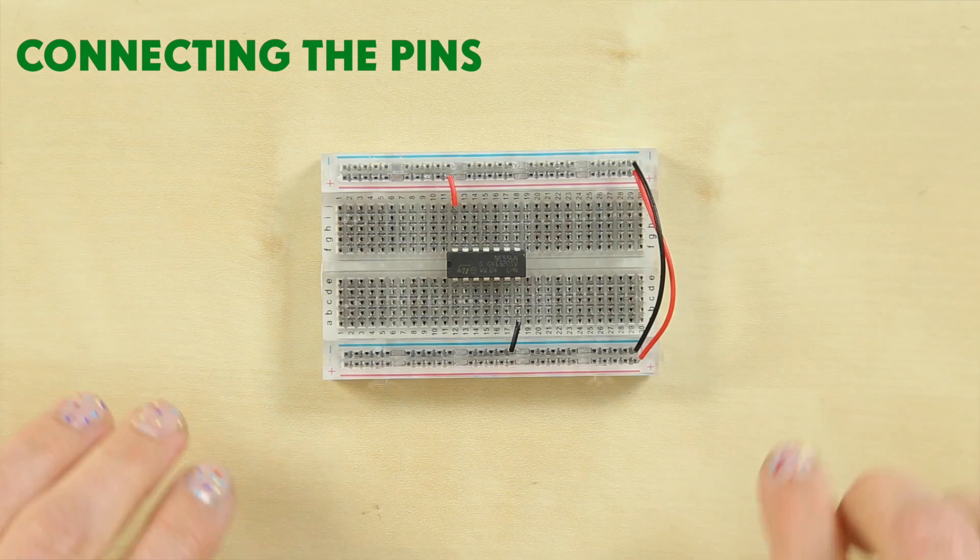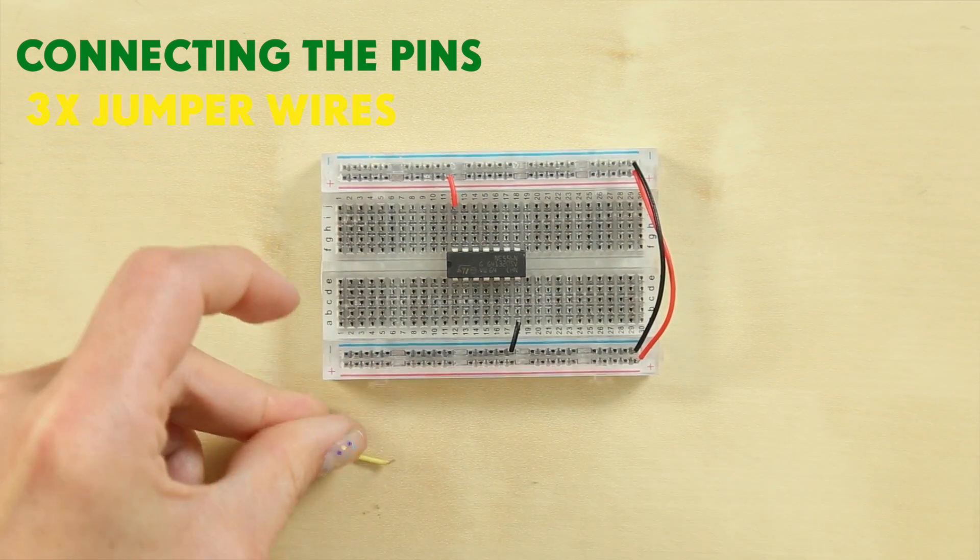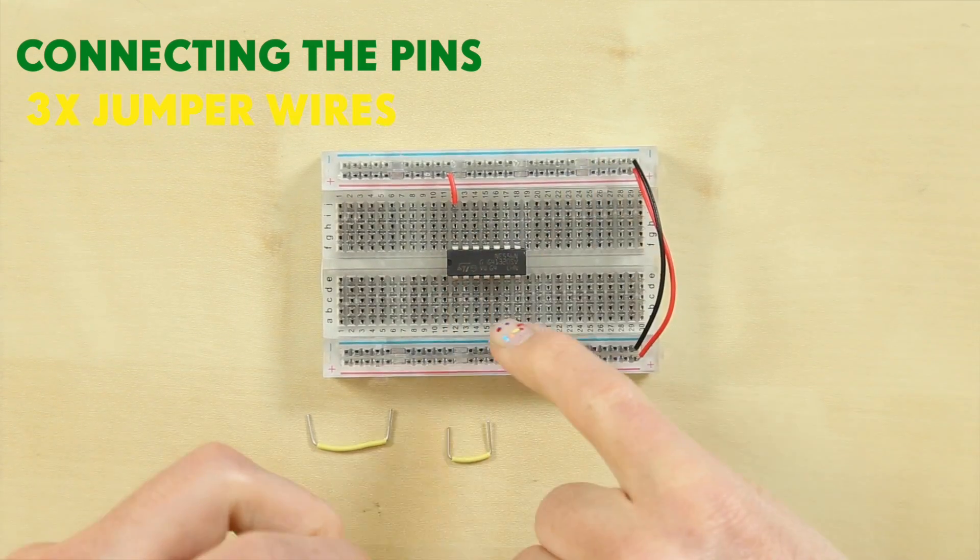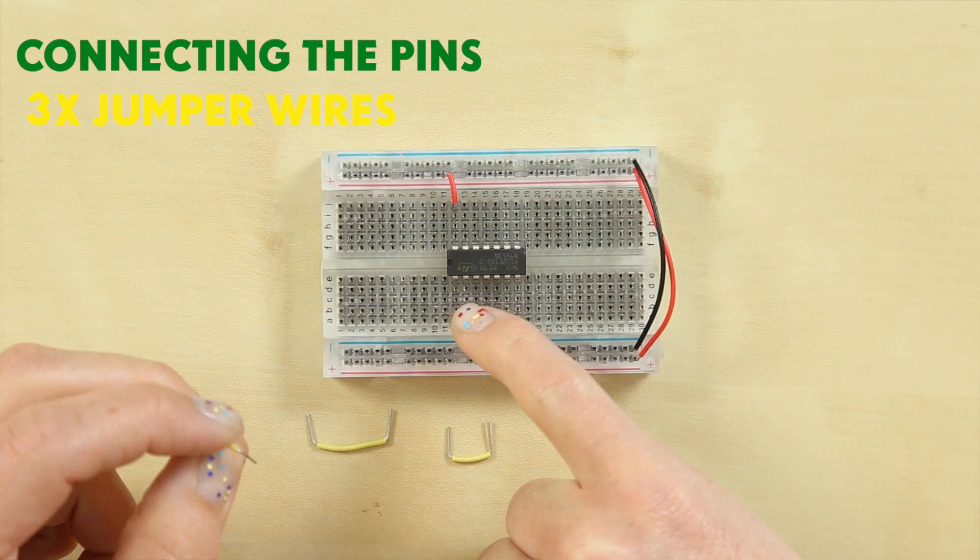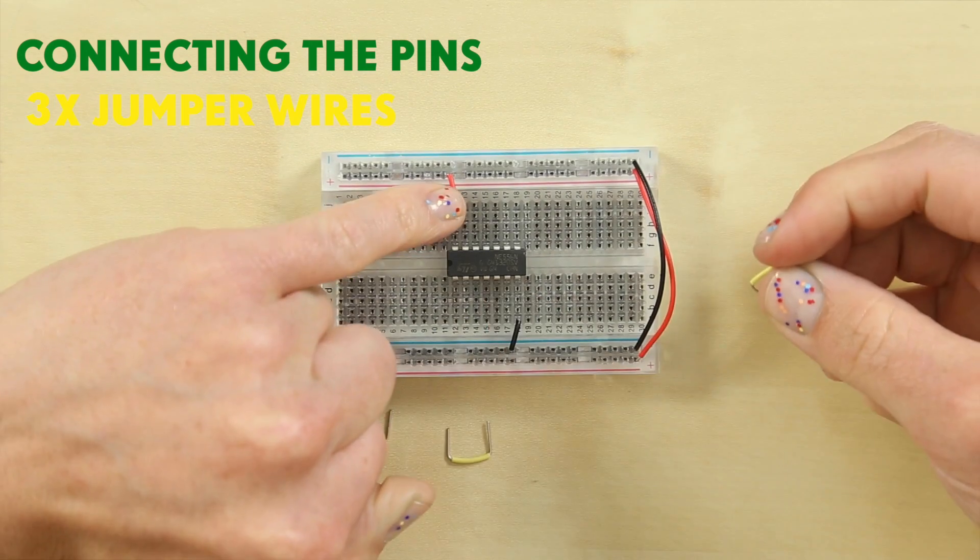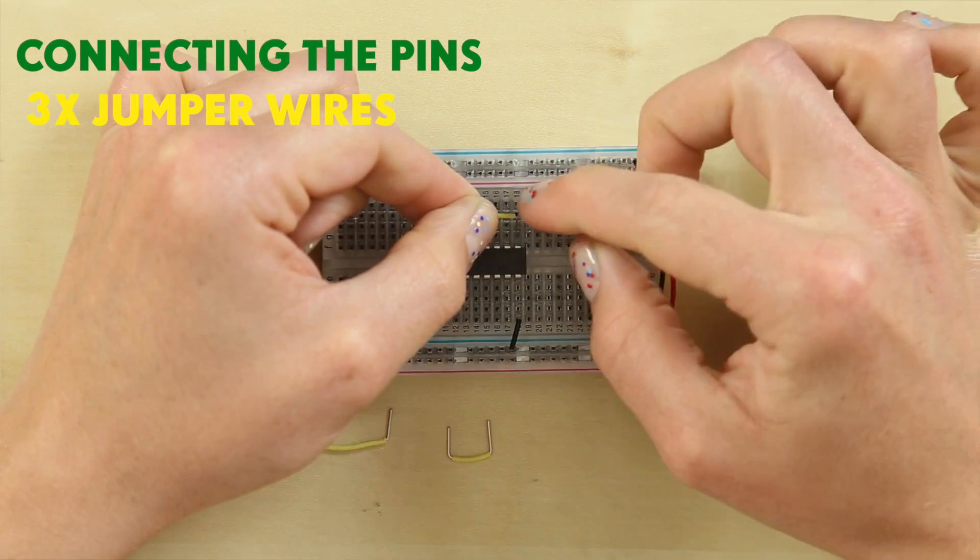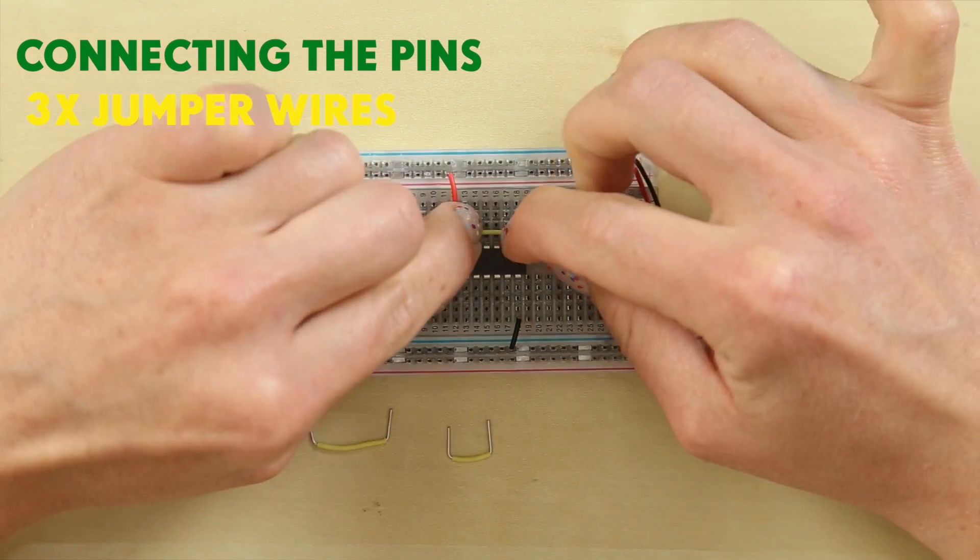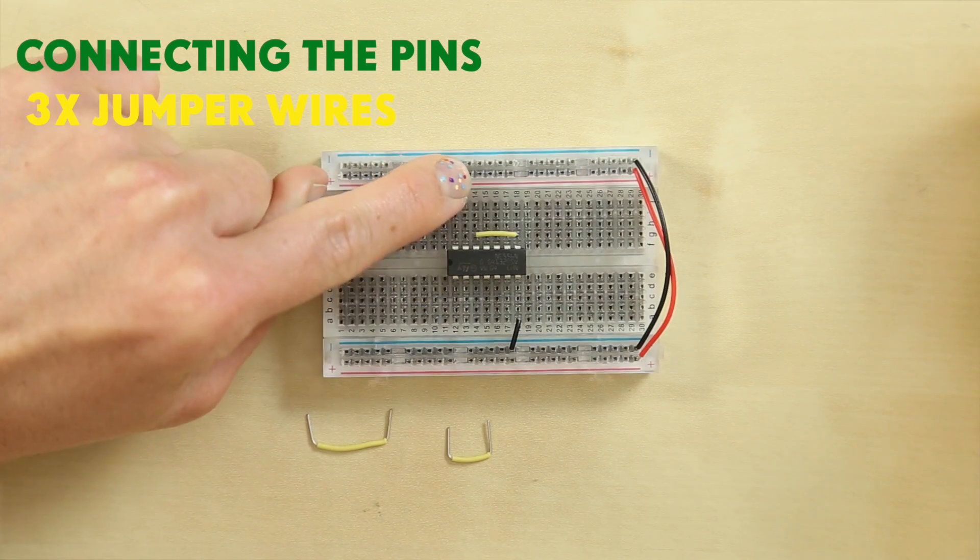Step number 3: Connecting the pins. For this you'll need your three yellow jumper wires, a medium length one and two short ones. Take the shorter ones and we're going to connect 8 and 12 of your IC chip and then number 2 to number 6 of your IC chip. We're still going to use the numbers on the outside to help. So place one leg of a yellow jumper wire into row 18 which is number 8 and the other leg in next to leg number 12 which is row 14.